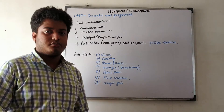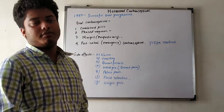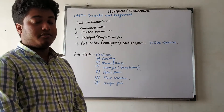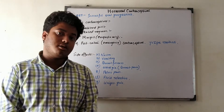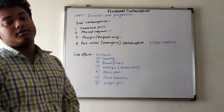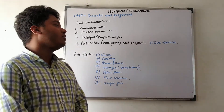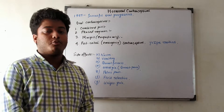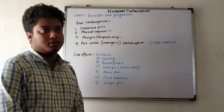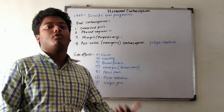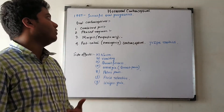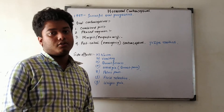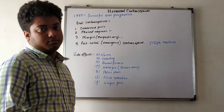Hello friends. In the previous videos we have discussed about the pharmacological roles of hormones. We discussed two hormones — estrogen and progesterone — and their pharmacological roles. Now we will discuss about hormonal contraceptives. We are discussing this chapter because population is a great burden; there is an overflow of population, so there is a need to control it.